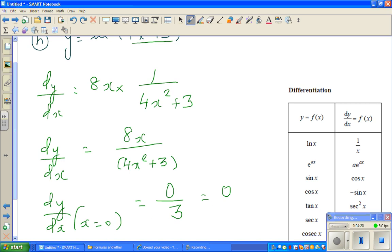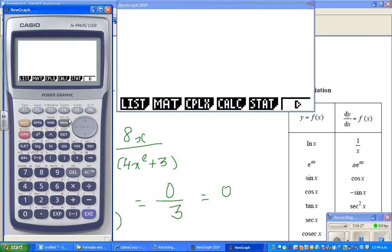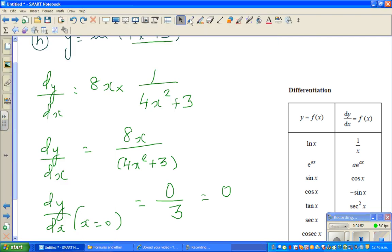So let us check this on the calculator. Menu, Run, Option, Calculus. So the function was natural log of bracket 4x squared plus 3, close the bracket, and at 0. The gradient has to be 0. Yep, that's right. So your answer is right. You can give yourself 5 ticks. See you in the next.